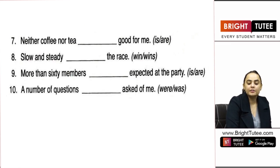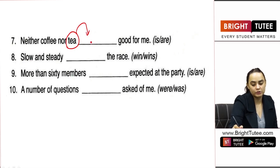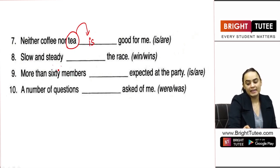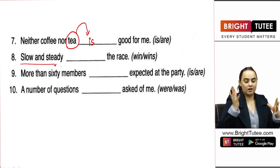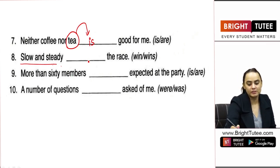'Neither coffee nor tea' — 'tea' is singular and closest to the verb, therefore the verb is singular. 'Slow and steady' — this is one idea only, therefore 'slow and steady wins the race.'